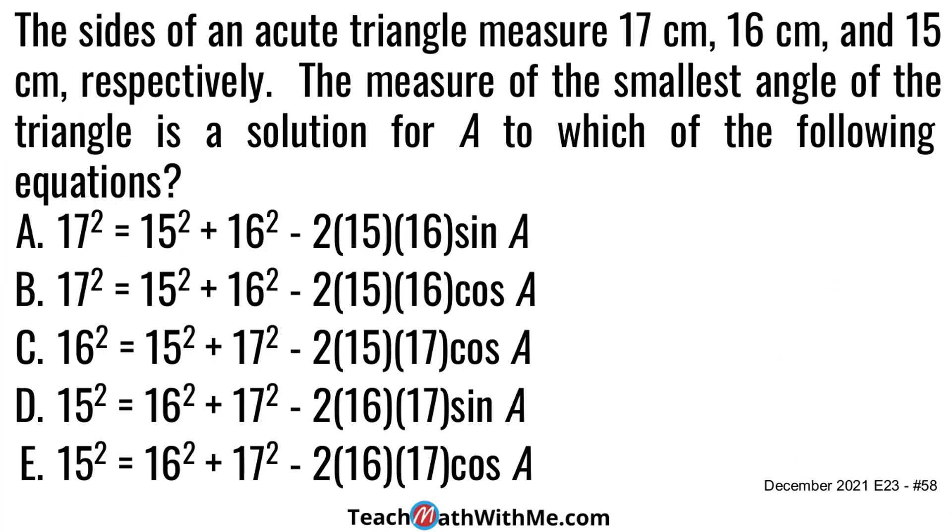Let's work this ACT math question that comes from the December 2021 test. It's question number 58, and it says that the sides of an acute triangle measure 17 centimeters, 16 centimeters, and 15 centimeters respectively. The measure of the smallest angle of the triangle is a solution for A to which of the following equations?